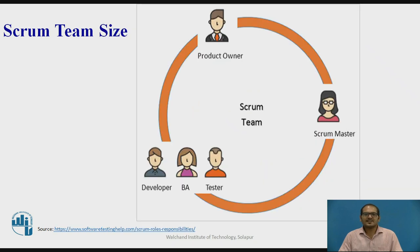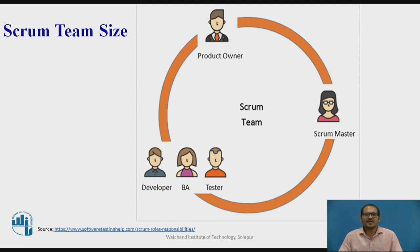Let us see the Scrum team size. The recommended development team size in Scrum is 6 plus or minus 3, that is from 3 to 9 members, which does not include the Scrum Master and the Product Owner. Now let us move ahead and discuss each of these roles in detail.